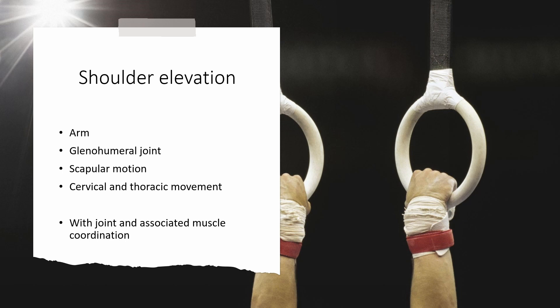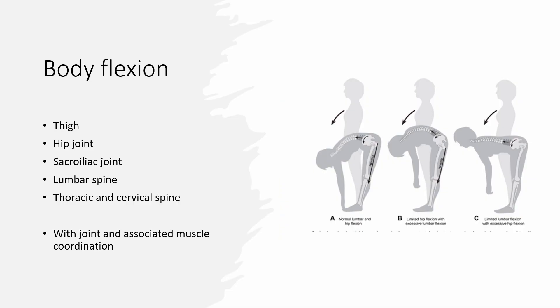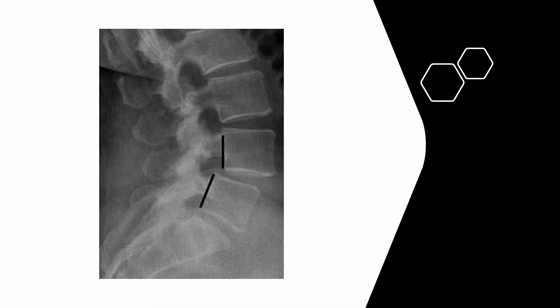This principle asserts that our bodies prefer the path of least resistance when moving or completing a task. If one part of our body, like a joint, is restricted, another part compensates for the movement. Though this can be beneficial in the short term, over time it can result in overuse injuries or other dysfunctions as compensating segments handle forces or demands beyond their typical functional range.